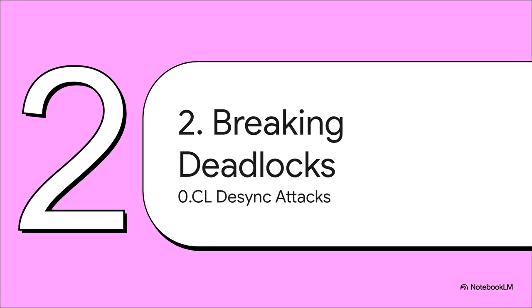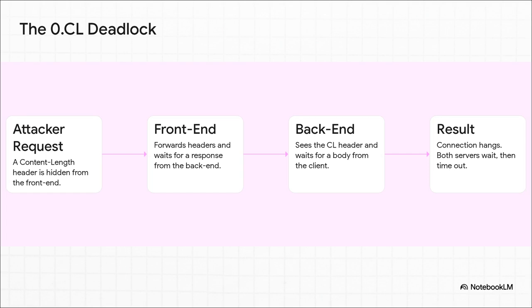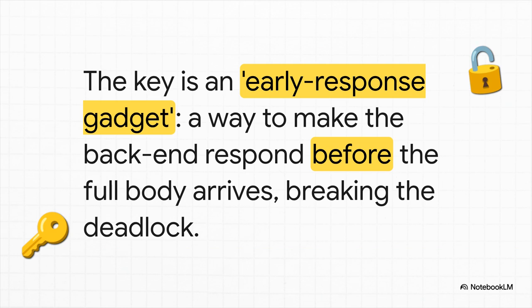With that foundation, we can now go after attacks that people literally thought were impossible to pull off in the real world. The infamous 0.CL desync is where the front end doesn't see a content length, but the back end does. For the longest time, everyone just wrote these off as unexploitable. The roadblock is a deadlock — a digital standoff. You send the request, the front end forwards the headers and waits for a response, but the back end sees the content length you hid and waits for a body you're never going to send. Both servers are stuck, staring at each other until the connection times out.